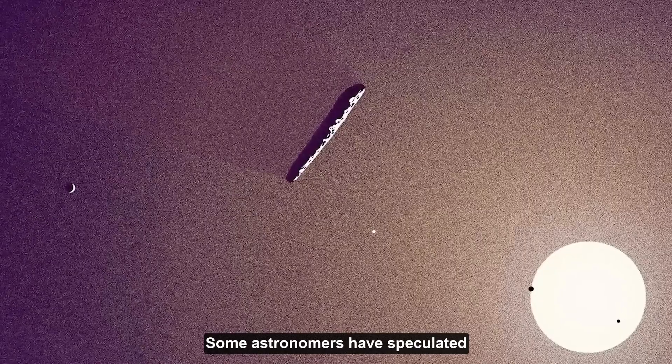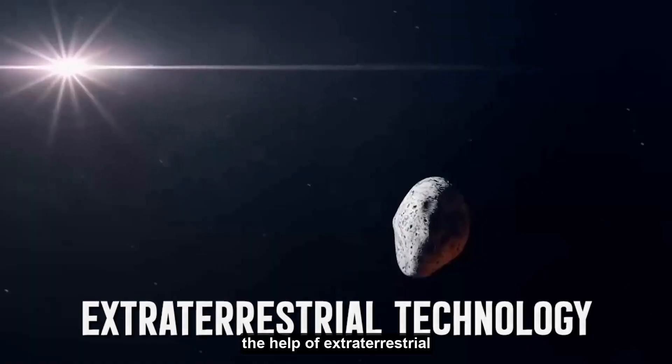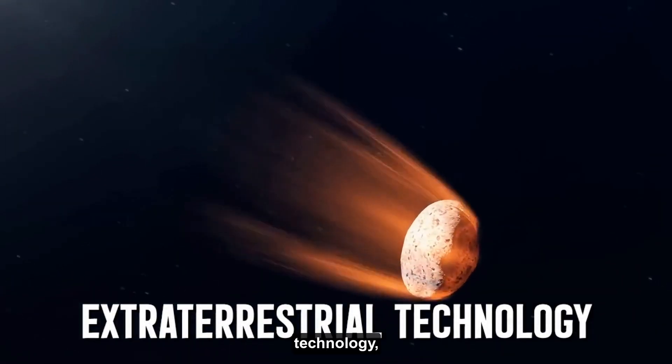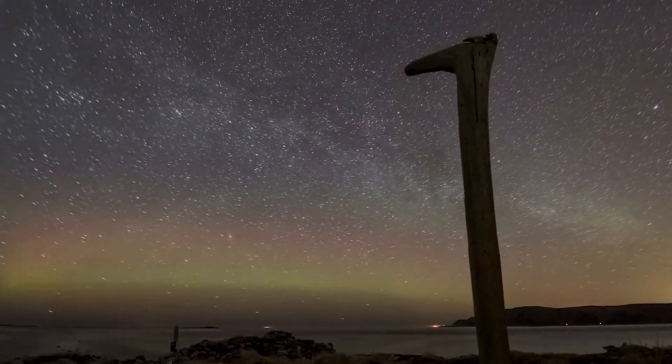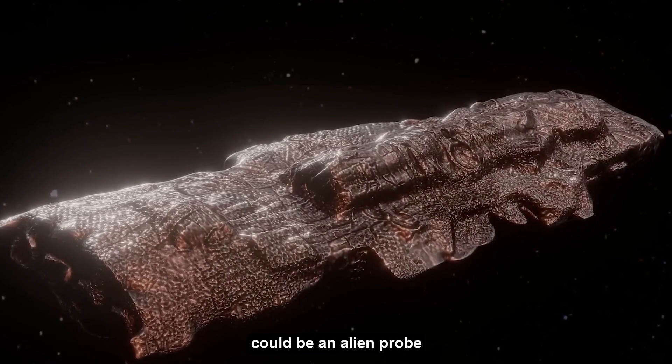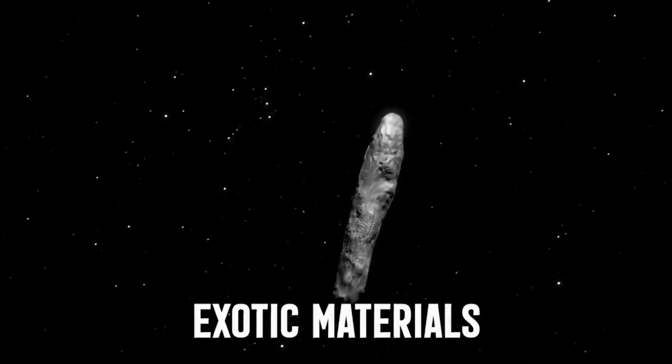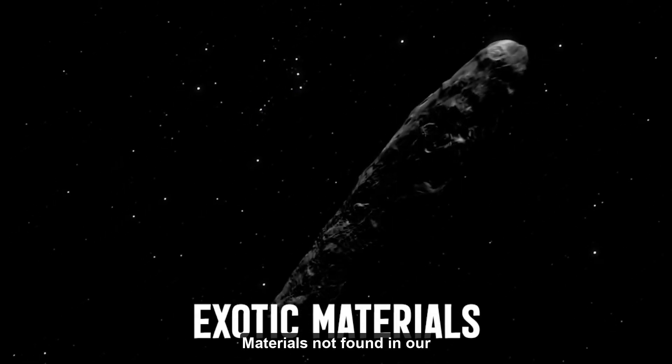Some astronomers have speculated that Oumuamua was created with the help of extraterrestrial technology, although there is currently no evidence to support this theory. Some even suggested that it could be an alien probe or spaceship, while others proposed that it may be composed of exotic materials not found in our solar system.